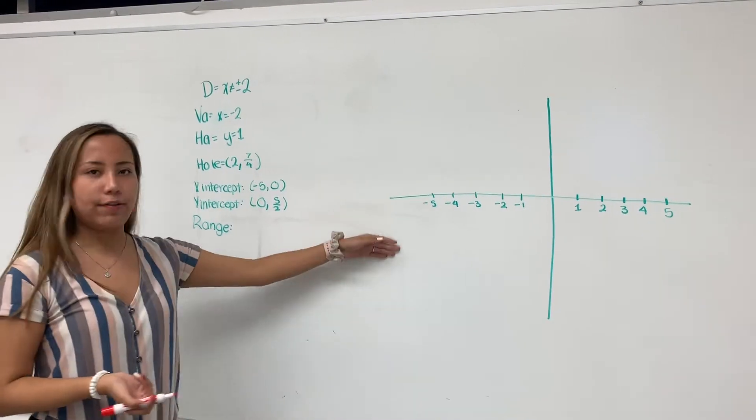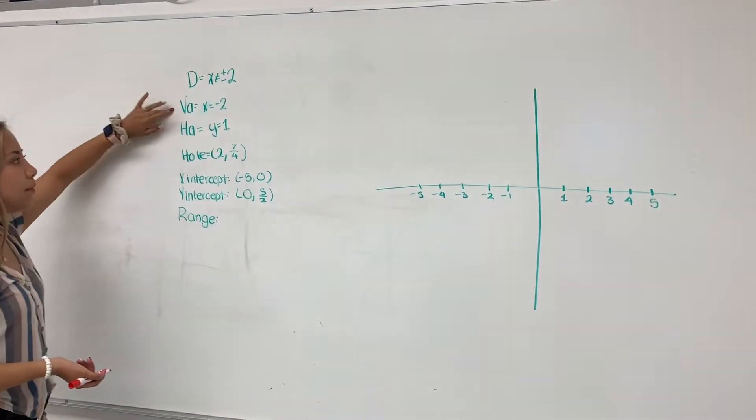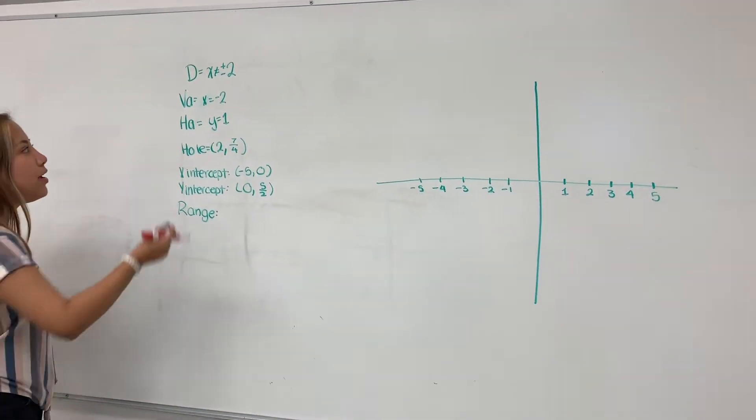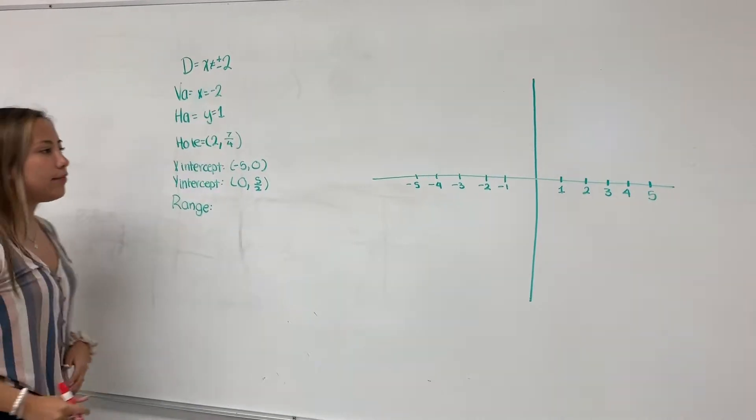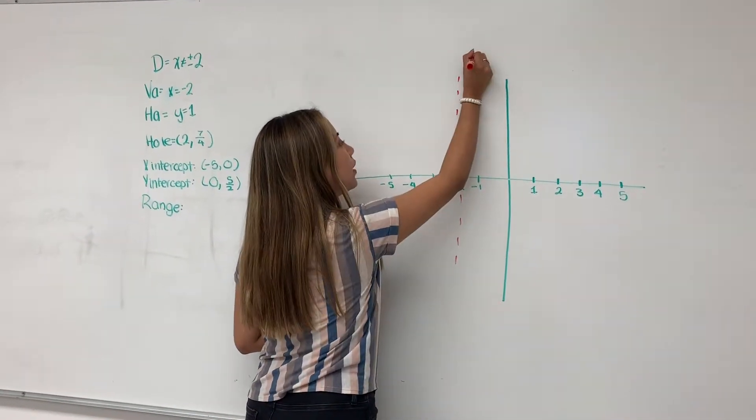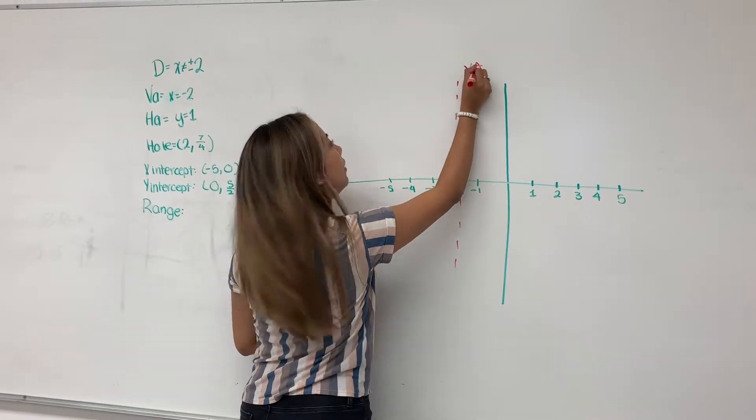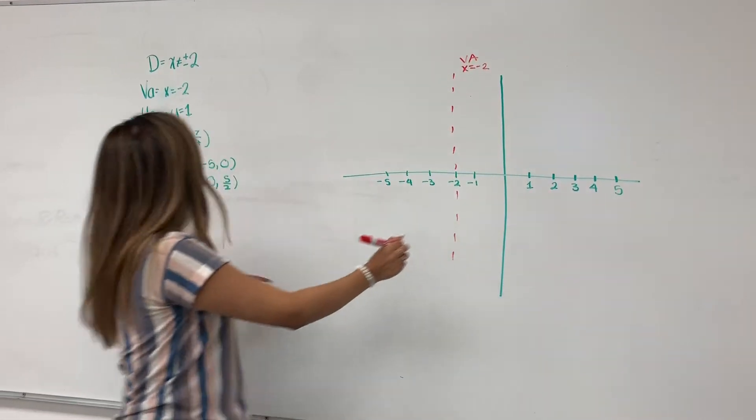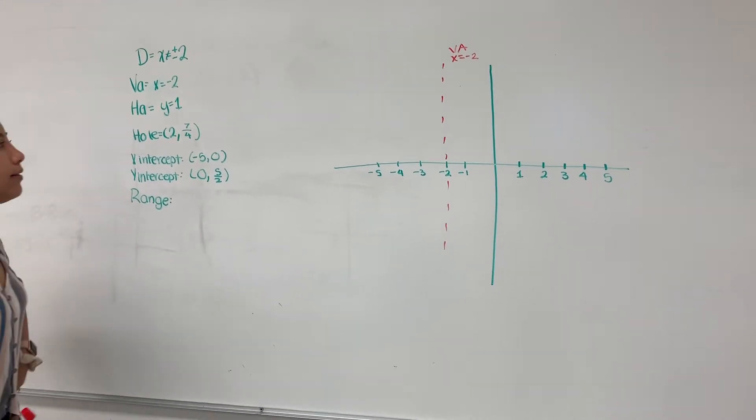So the first step for graphing: First, we need to plot the vertical and horizontal asymptote. So the vertical asymptote is at negative 2. And don't forget to always name it. And our horizontal asymptote is at 1.